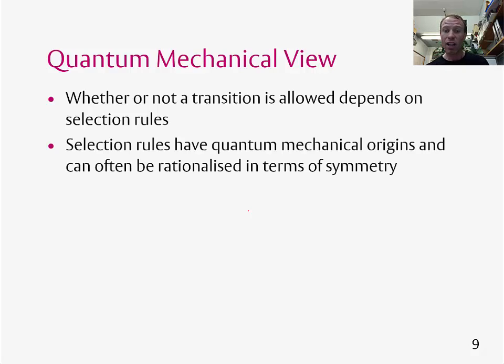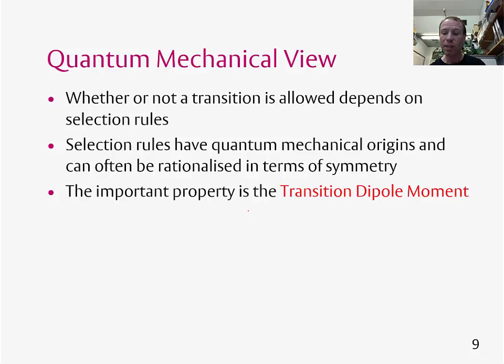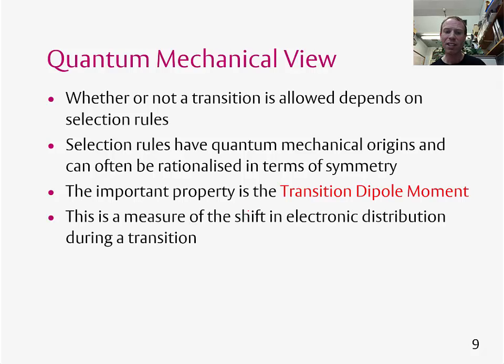Selection rules come from quantum mechanics, and they can often be rationalised in terms of symmetry. The important thing is the so-called transition dipole moment, and this tells us whether a transition is allowed or not. It's effectively a measure of the shift in electronic distribution during a transition.